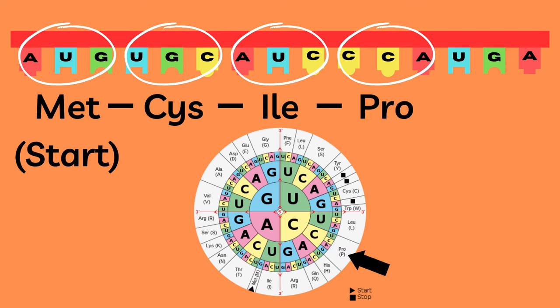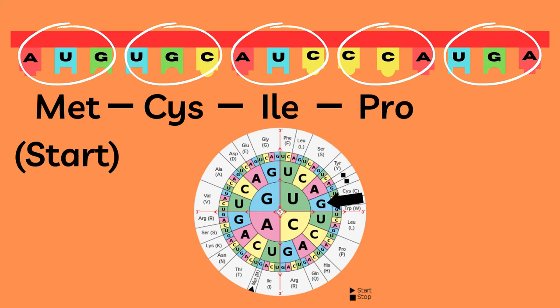The final codon is UGA, which you might remember since it sounds rather caveman-like: UGA. Let's read it out just to ensure that we know how to use the wheel as well. So we simply read U to G to A and find this little square, which we can see means stop.